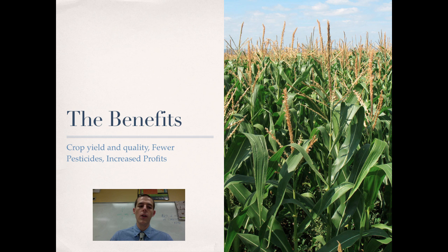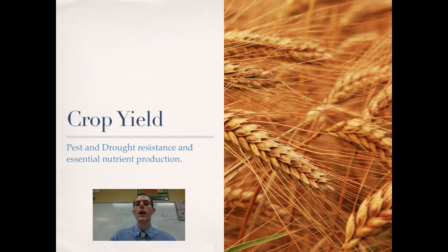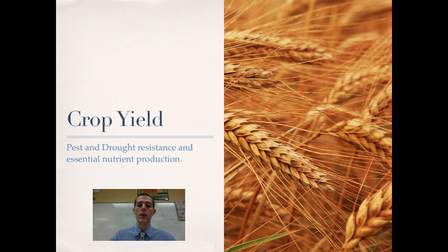The benefits I want you to be aware of are increased crop yield and quality, fewer pesticide use, and increased profits, which farmers like. First up is increased crop yield, and there are a couple of ways that genetically modifying crops can increase yield. The first one is resistance to pests — if your crop is resistant to the pests that would normally attack it, then obviously you're going to be able to produce more food on a given area of land. Also, you can engineer crops so that they are resistant to drought, which means that if there is a drought in your area, you're still going to be able to raise your crops where you normally would not be able to do so.